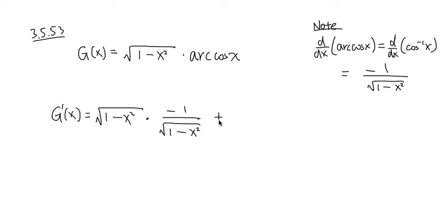We add the second function, which is arccos x, and multiply by the derivative of the first function. The derivative of square root of something is 1 over 2 square root of something. The inside stays the same, which is 1 minus x squared.